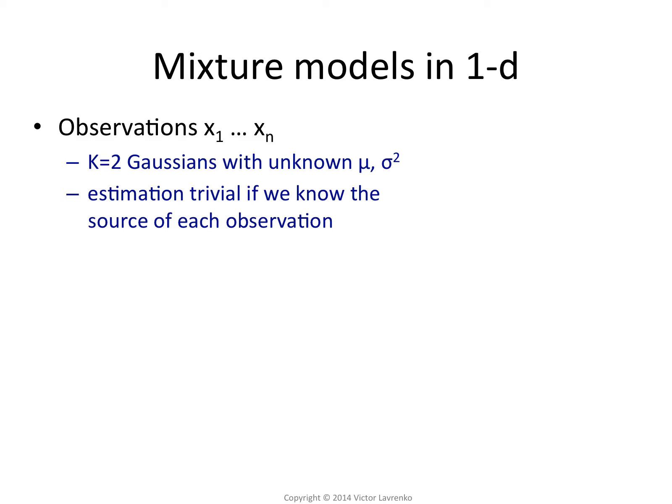Let's say that I have a bunch of observations, x1 through xn, and in one dimension these are just numbers. So each one of them is a little number.